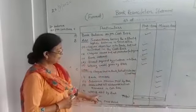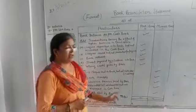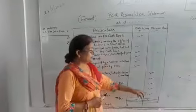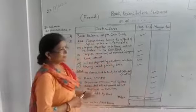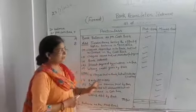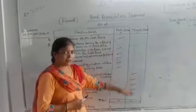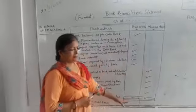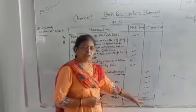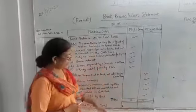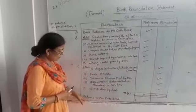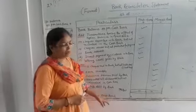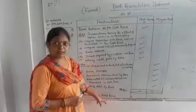After that, wrong debit by the bank — the bank has mistakenly debited our account, so you also need to minus it from the cash book. After doing all these plus and minus entries, you will total both sides. The higher total minus the lower balance will give you the Balance as per Passbook. This is our method.